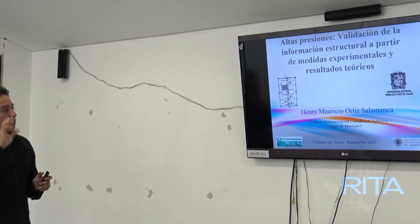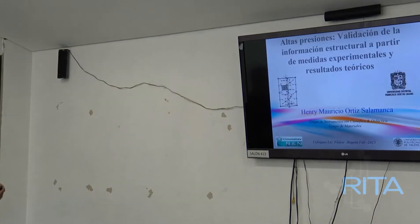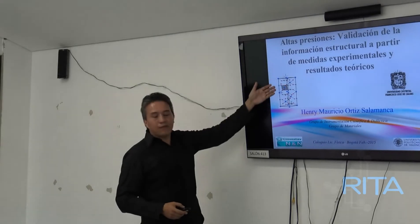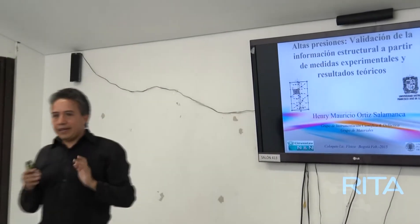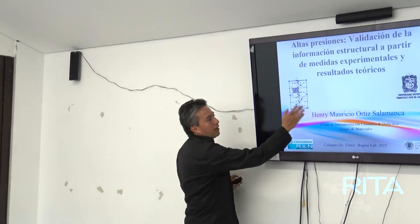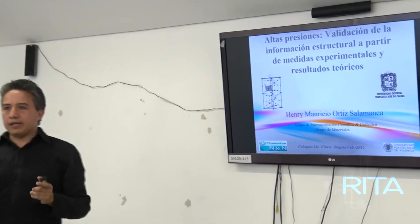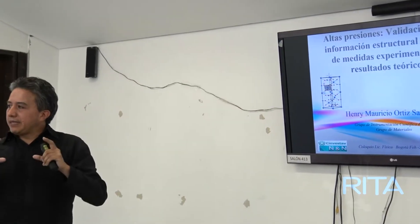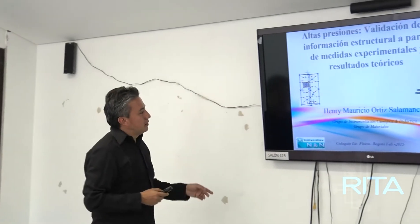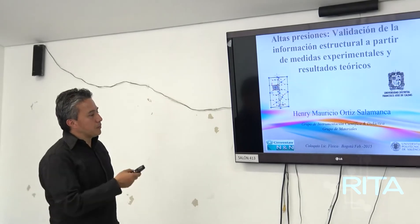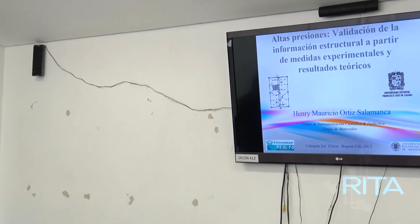La disculpa es hablar de altas presiones, pero realmente lo que está de fondo es cómo hacemos nosotros para validar información estructural mediante métodos experimentales y obteniendo resultados teóricos. La idea acá es contrastar esas medidas: queremos hablar, por ejemplo, de la forma geométrica que los átomos adquieren en un sistema, tal que, al unirse, podemos colocar esto como pilares o celdas — celda unitaria o celda cristalina — que permite representar el material en general. Vamos a mostrar algunos resultados que se han publicado a la fecha.